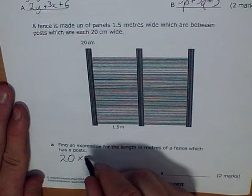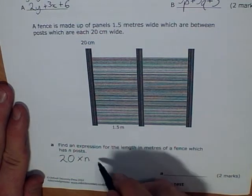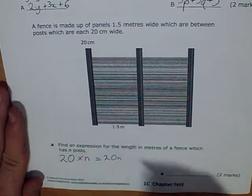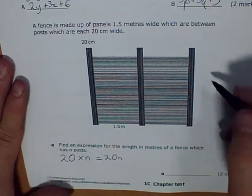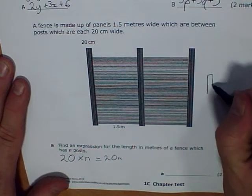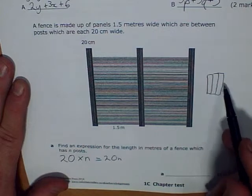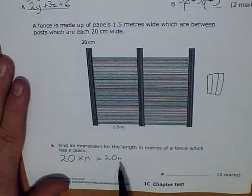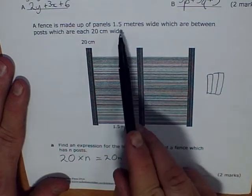If it has n posts, how much distance is that going to be? If I do this in centimetres, it's going to be 20 centimetres multiplied by how many posts we've got. That will be my width of all the post parts. I can write 20 times n in algebra as 20n. So that would be the case if it was just one post after another.